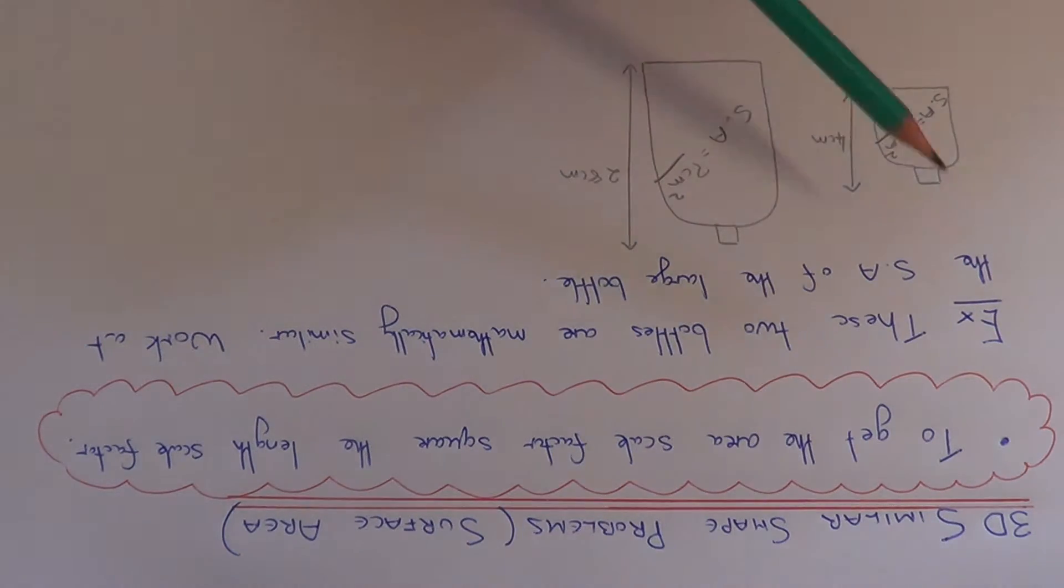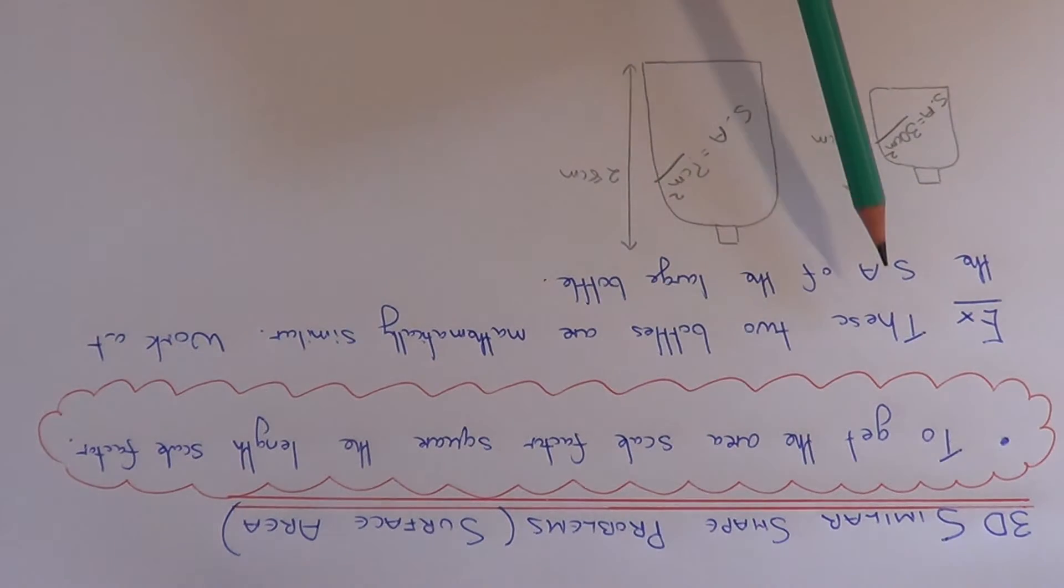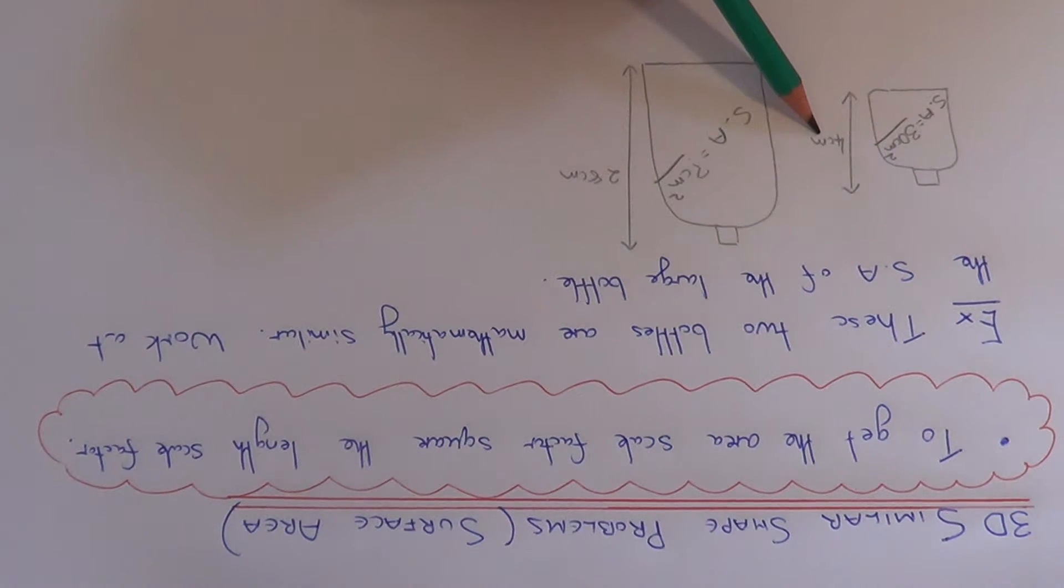So let's have a look at the example here. These two bottles are mathematically similar and we need to work out the surface area of the larger bottle. The smaller bottle has a height of 4cm and the surface area is 30cm squared.